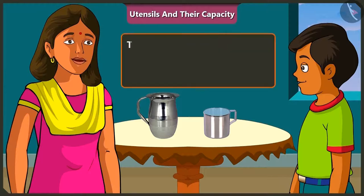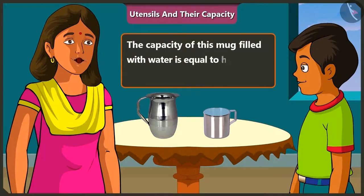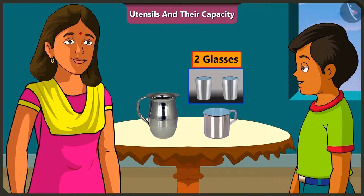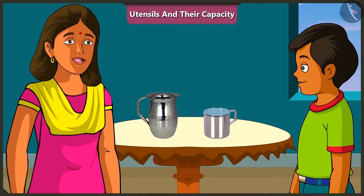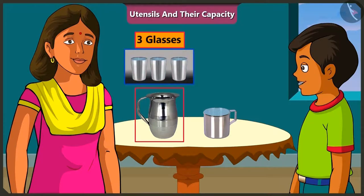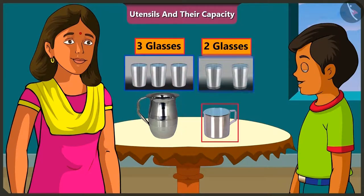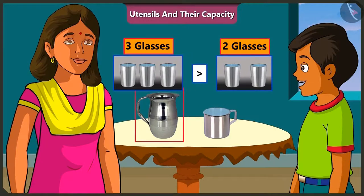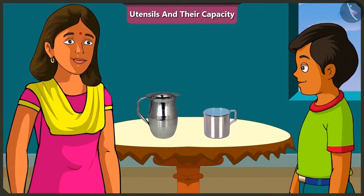Now tell me, what is the capacity of this mug? That means, how many glasses of water can fill this mug? The capacity of this mug is equal to two glasses. So tell me now, which has more water, a half filled jug or a mug which is fully filled? This half filled jug has three glasses of water and the fully filled mug has two glasses. So, here the jug has more water than the mug. Well done, Mishtu.